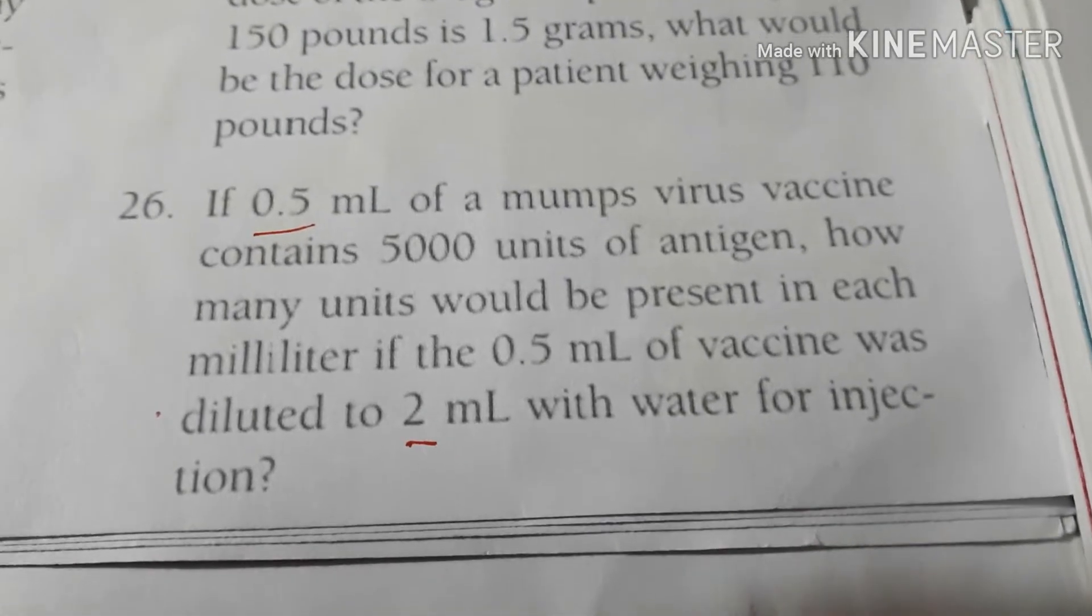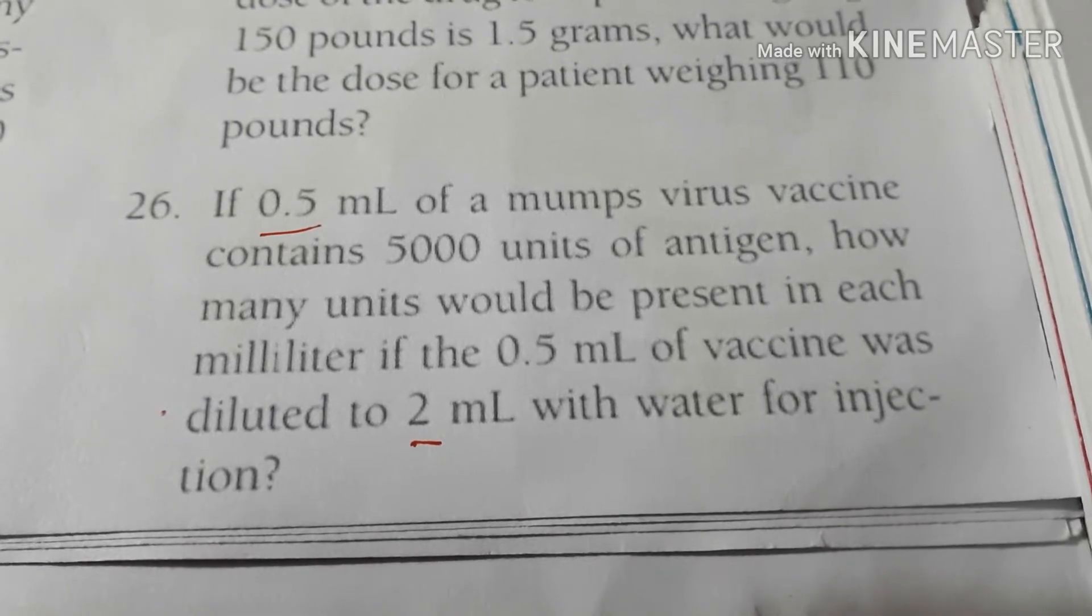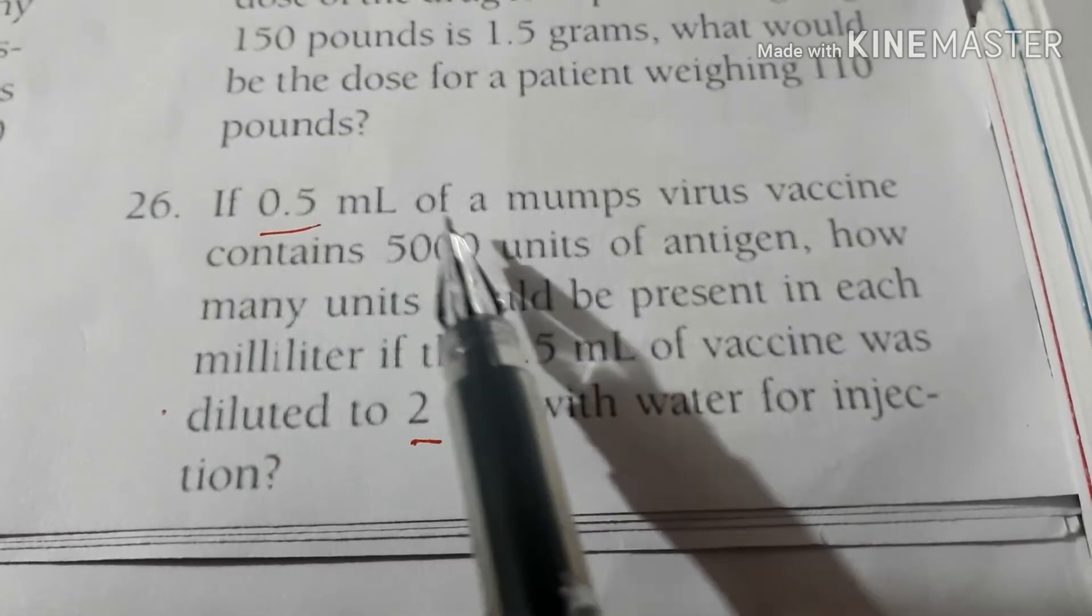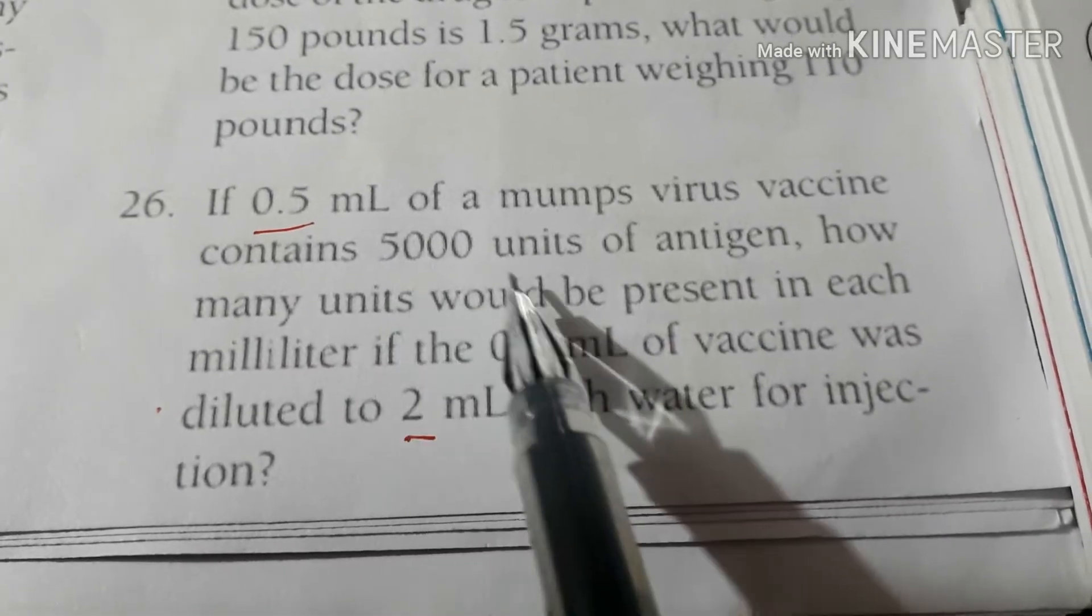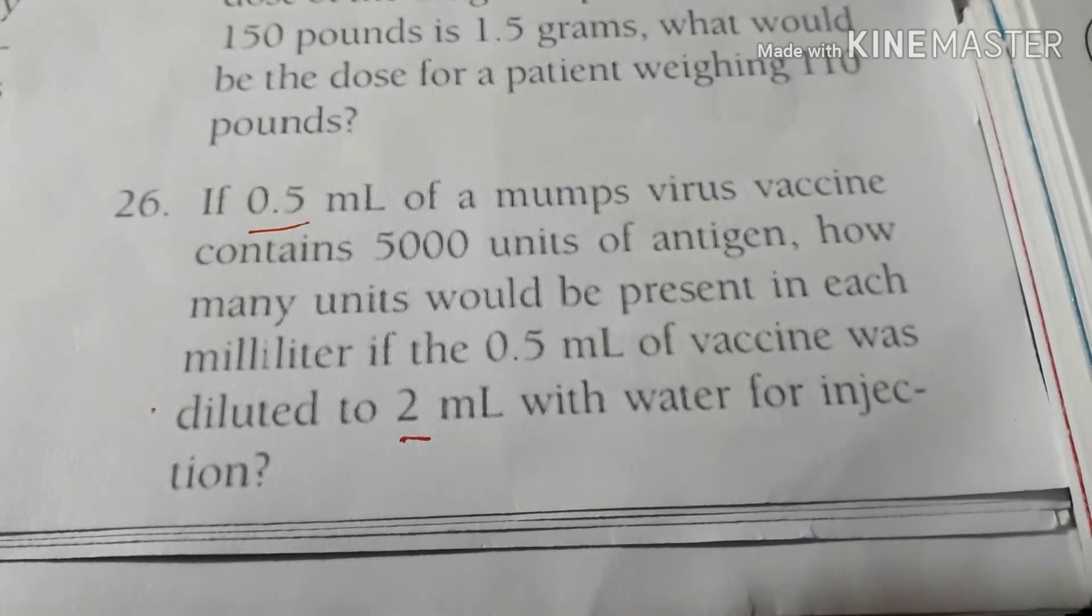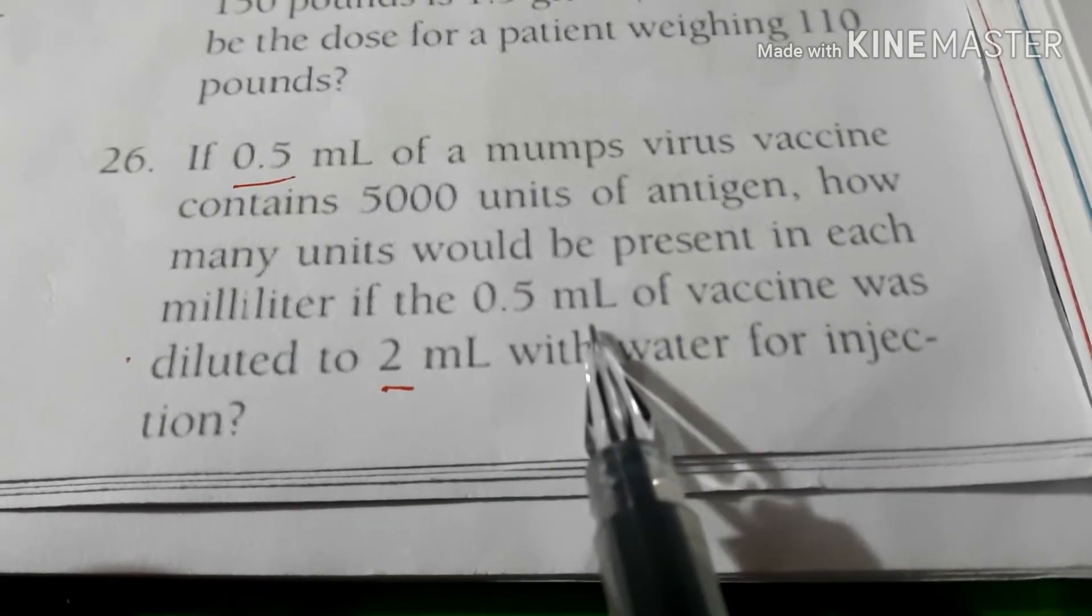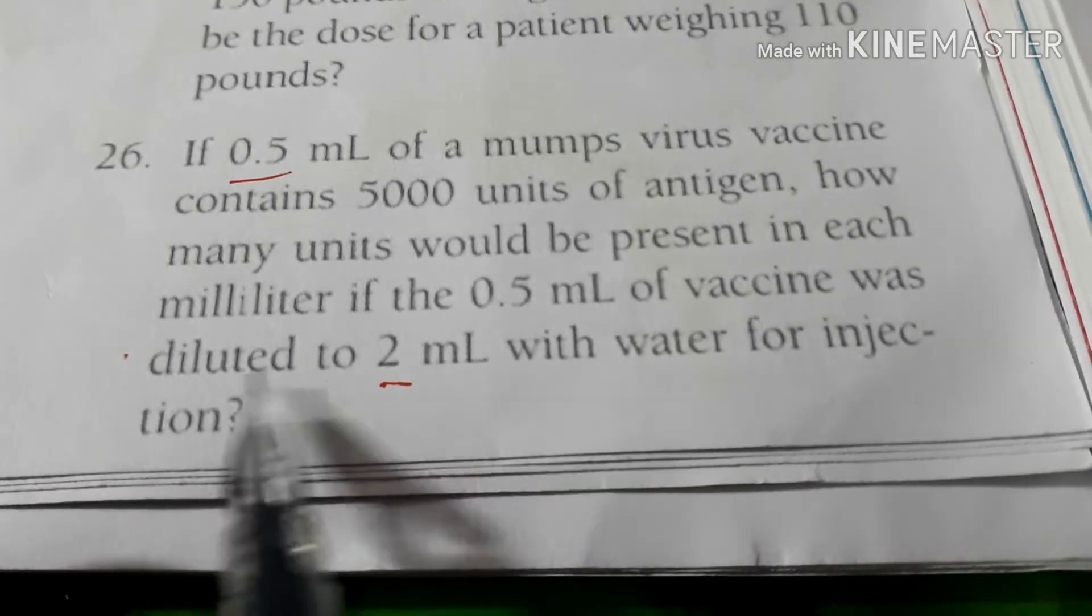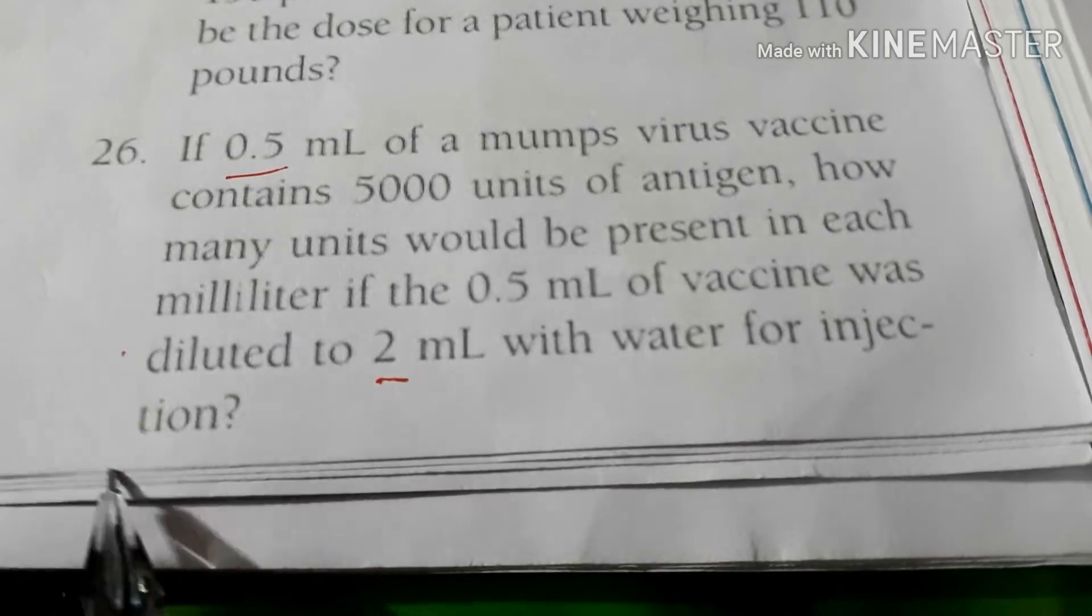السلام عليكم سؤال رقم 26. Principles of Pharmacy Chapter 1. If 0.5 milliliter of mumps virus vaccine contains 5000 units of antigen, how many units would be present in each milliliter if the 0.5 milliliter of vaccine was diluted to 2 milliliters with water for injection?